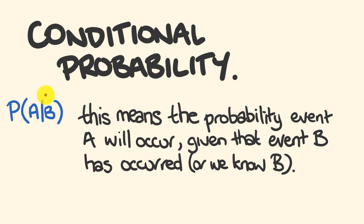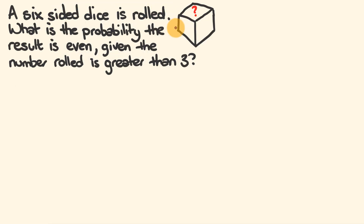Let's have a look with an example. So say we had a six-sided dice which has been rolled — what's the probability the result is even, given the number rolled is greater than three? There are a couple of different ways we could solve this — three different ways. We could use logic, which is what we're going to look at for this example. We could also use a formula, and the other way is by using a Venn diagram, which we'll see in the next example.